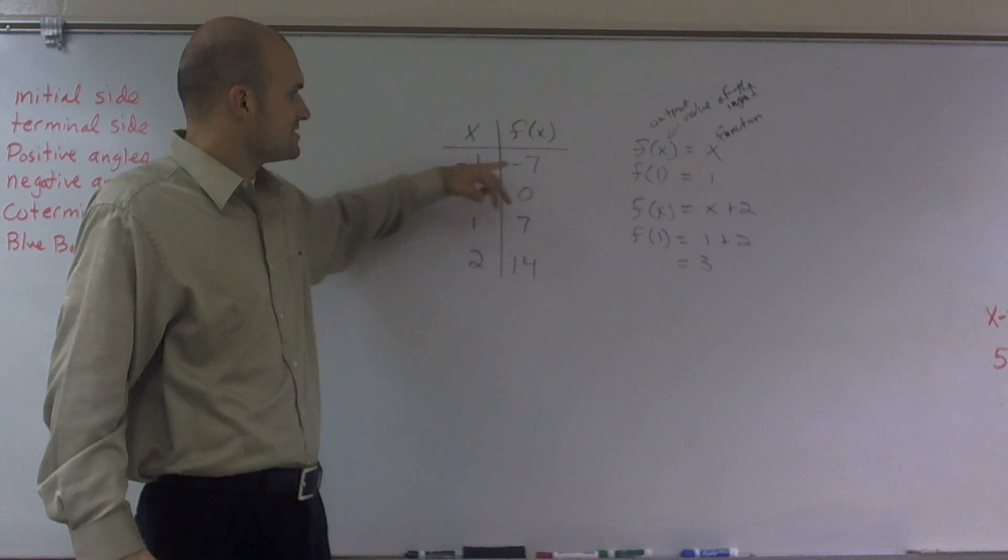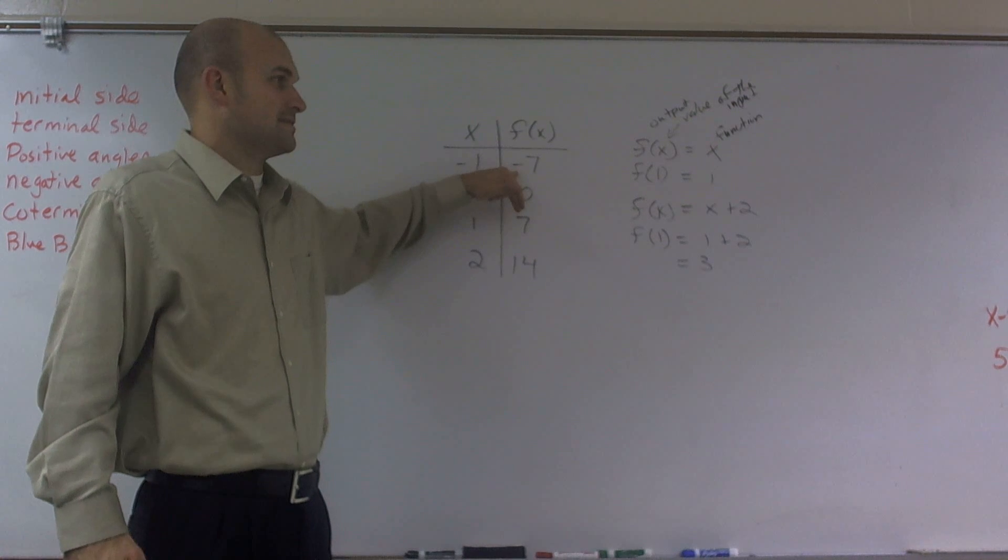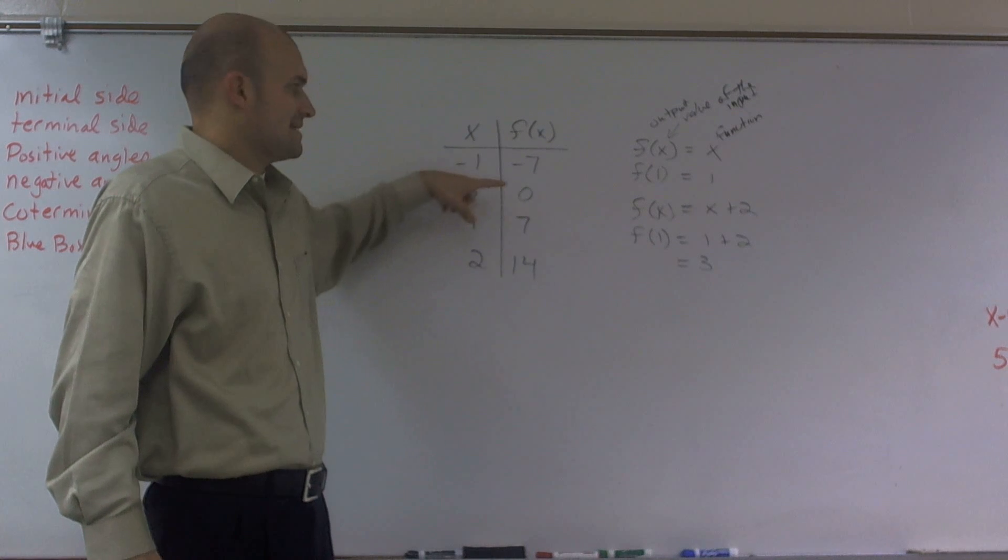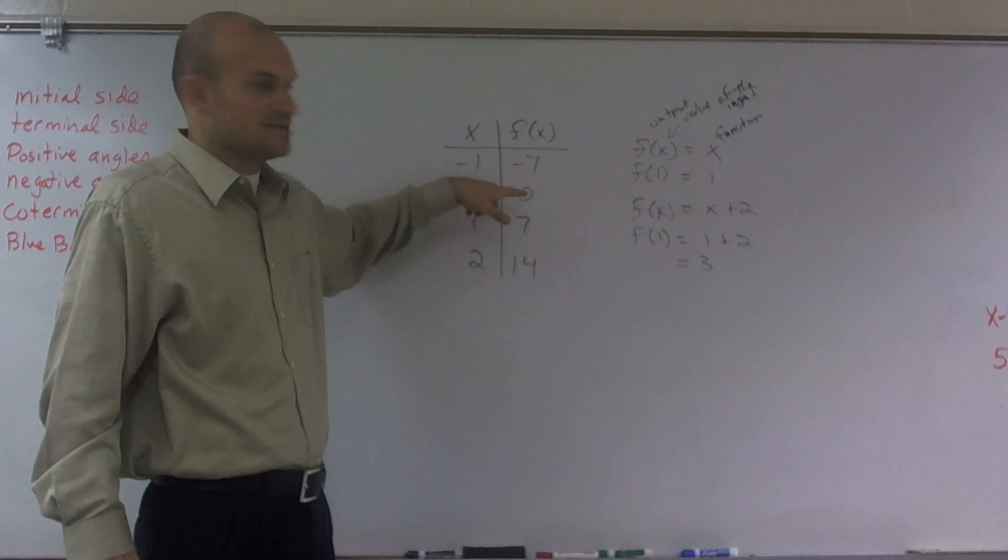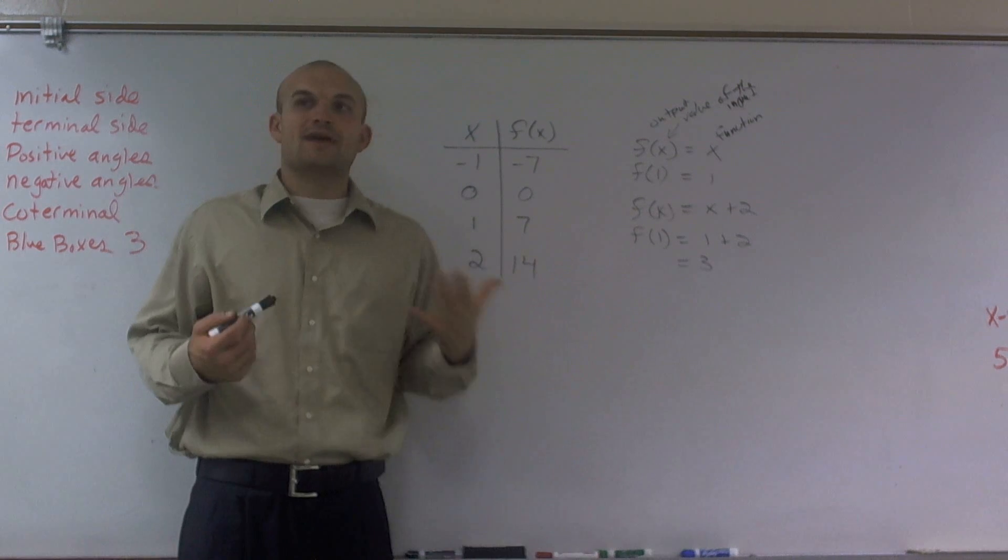So I look at this. To go from negative 1 to negative 7, I would have to subtract 8. And then we want to see, is this true for the rest of them? Well, 0 minus 8 does not give me 0, and 1 minus 8 does not give me 7. So therefore, subtracting or adding is not going to work.